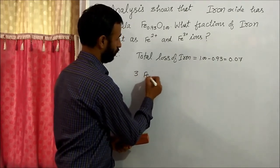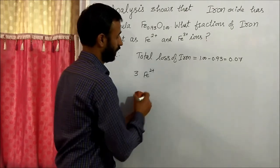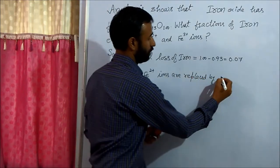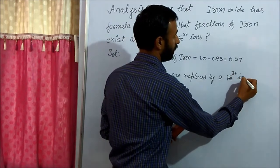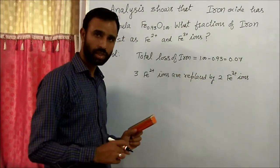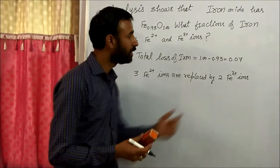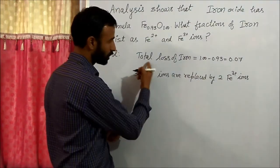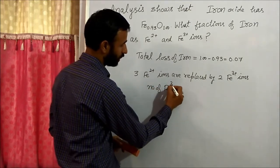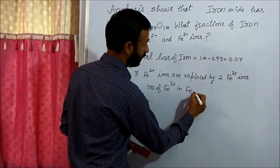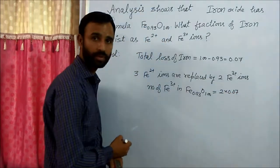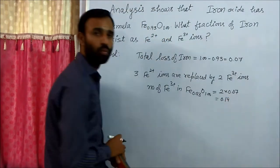Again applying the same logic: three Fe²⁺ ions are replaced by two Fe³⁺ ions. If one iron is lost per formula unit, then two Fe³⁺ ions are added. As the total loss of iron is 0.07, the number of Fe³⁺ ions in Fe₀.₉₃O₁.₀₀ is equal to 2 × 0.07 = 0.14.